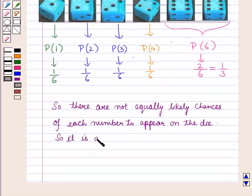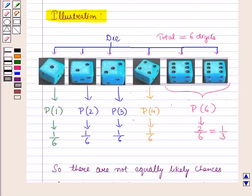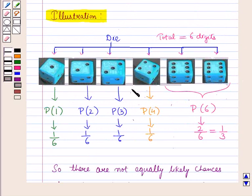This means it is a biased die. When we perform an experiment where all the items do not have equally likely chances of being selected, then it is called a non-uniform probability model.